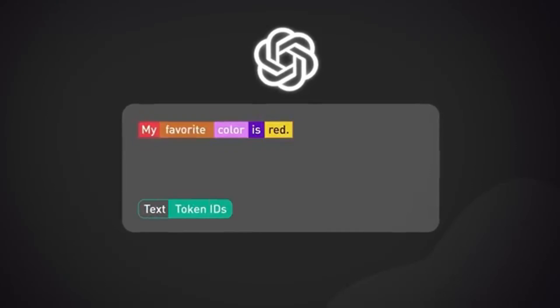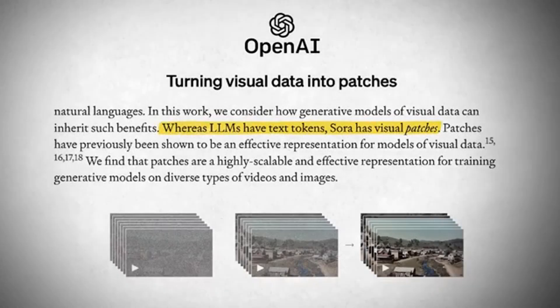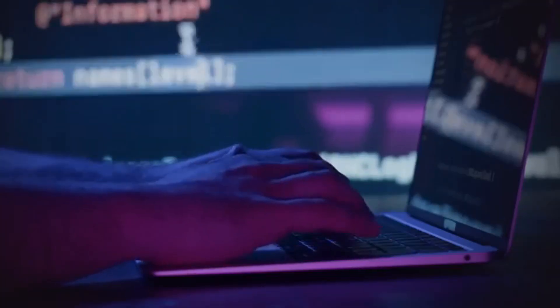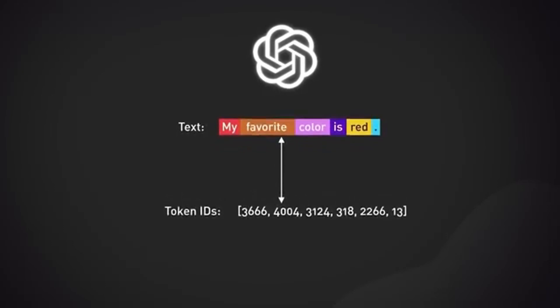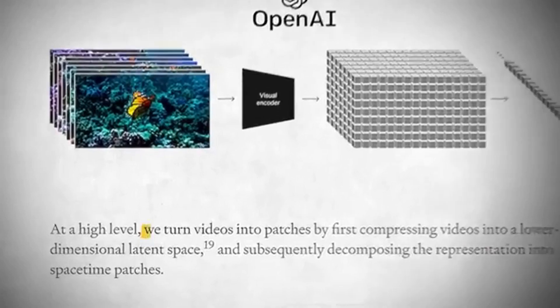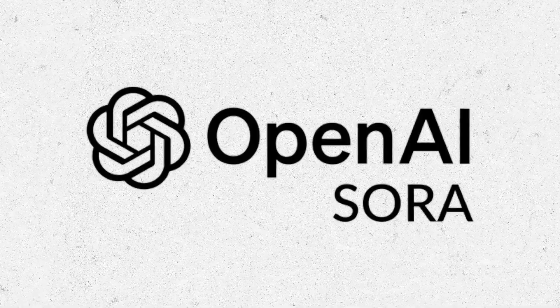You might be wondering how Sora is able to do all of this. Its functionality is actually very similar to ChatGPT's. ChatGPT uses tokens, while Sora uses patches — the equivalent for visual data. Whatever you ask, ChatGPT divides the text into tokens and generates its answer through tokens. Similarly, Sora AI tries to understand photos and videos by dividing the visual data into visual patches, and even while creating its output, it uses these visual patches to make the video.